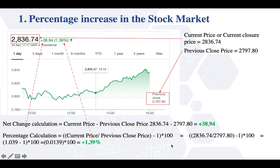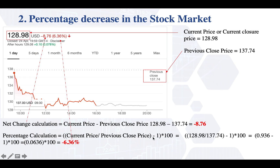I hope that has been clear — it's almost straightforward. The other example is the decrease, assuming a different stock. Again, assuming it's the weekend and a daily timeframe, the difference between the current price and previous closure price is negative. That's why it's a decrement — it's negative. And the percentage calculation is always the same way, and the difference is negative, so we get minus 6.36%.